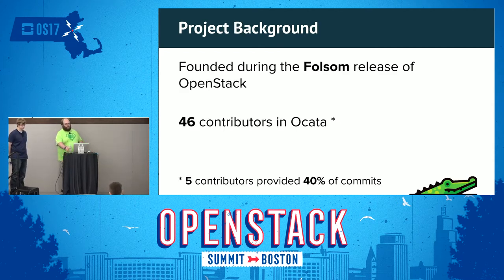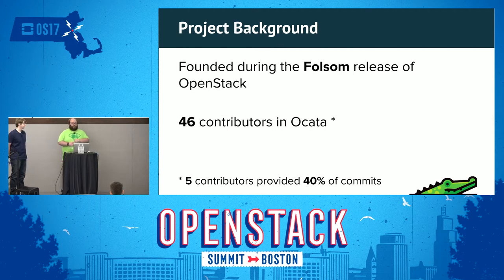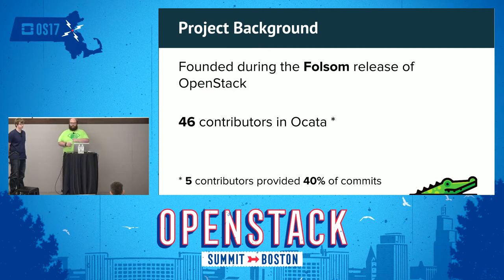Designate has actually been around for a long time. The first commit was in September 2012. We ran in production in HP Public Cloud for two years, all before we were incubated into OpenStack — we were previously running in StackForge. In the last cycle we had 46 contributors, but that's not as good a number as you'd think. There are five people who did most of the work, with a huge number of single-commit contributors. Part of this update is that we need more people to start contributing.